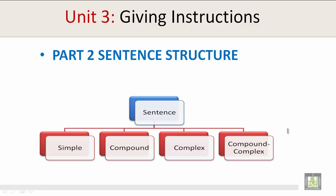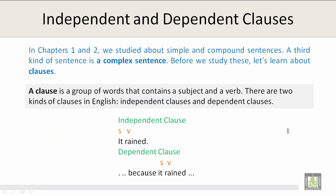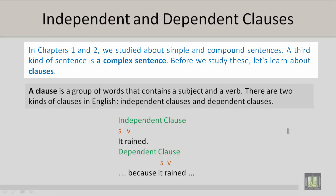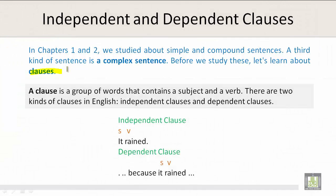Part 2: Sentence Structure. In Chapters 1 and 2, we studied about simple and compound sentences. A third kind of sentence is a complex sentence. Before we study these, let's learn about clauses.